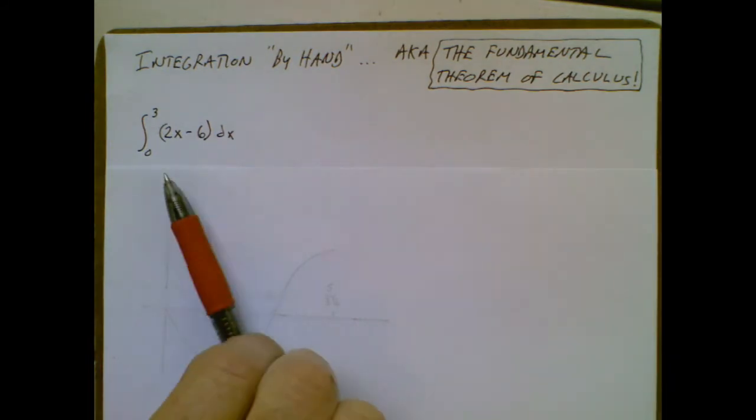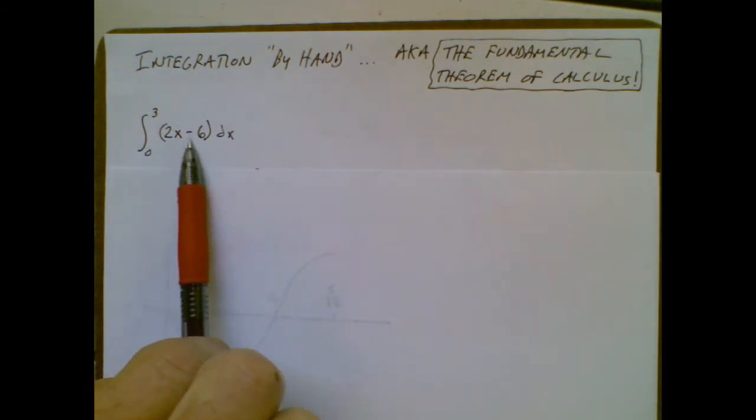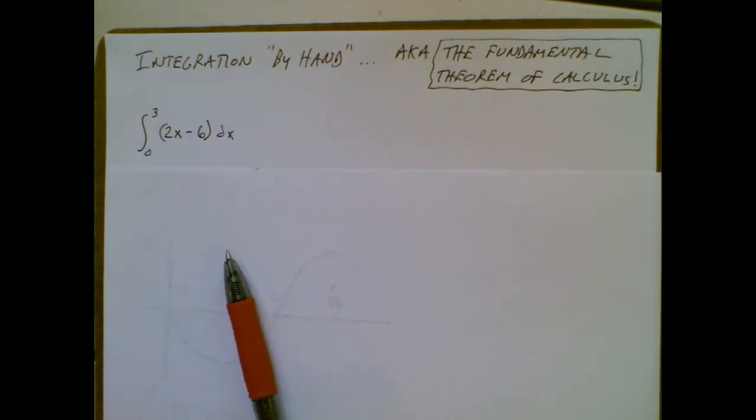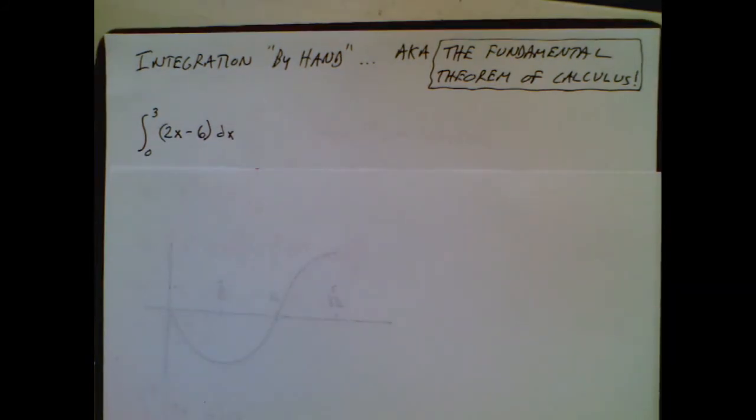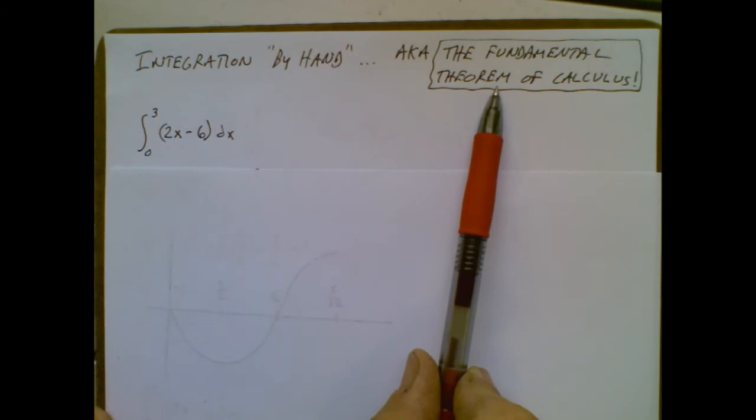So in this very first problem, it's pretty straightforward in the fact that you could probably graph 2x minus 6 and calculate the area via geometry. But what's going to happen is eventually this integrand is going to get more and more complicated where that's not going to be an option for you. So I'm going to go through the steps of integration by hand. And just so you understand the importance of this, this is called the Fundamental Theorem of Calculus.